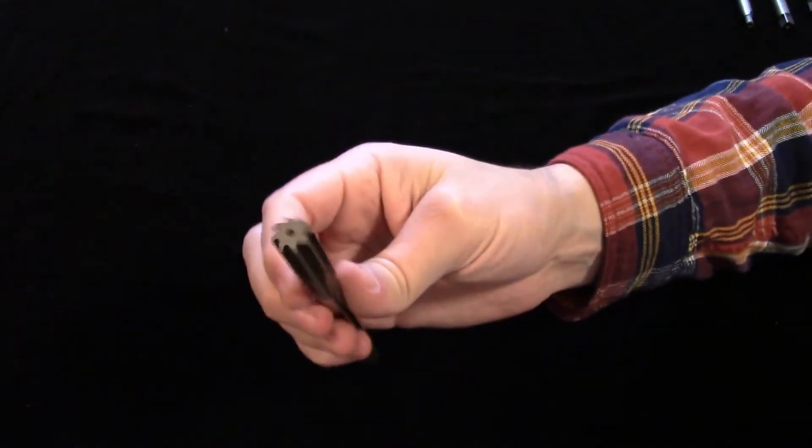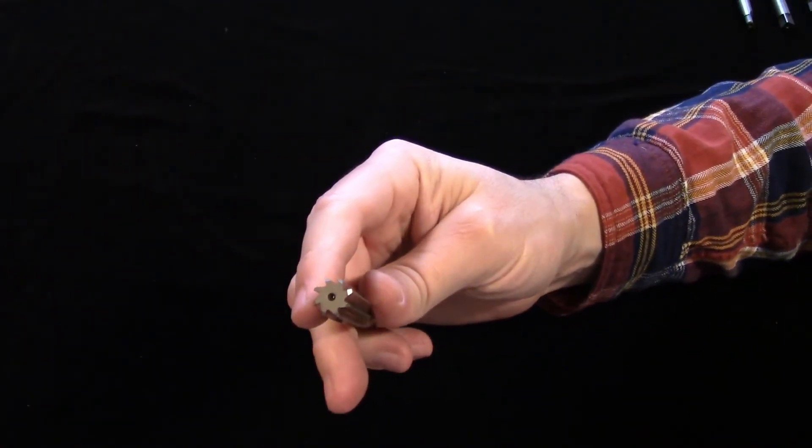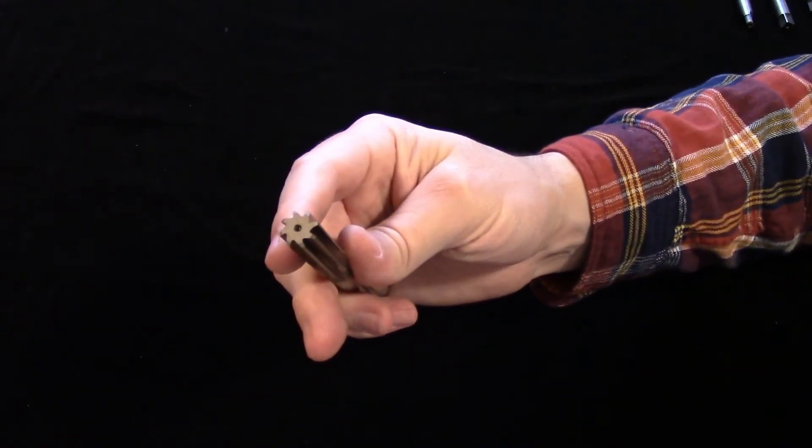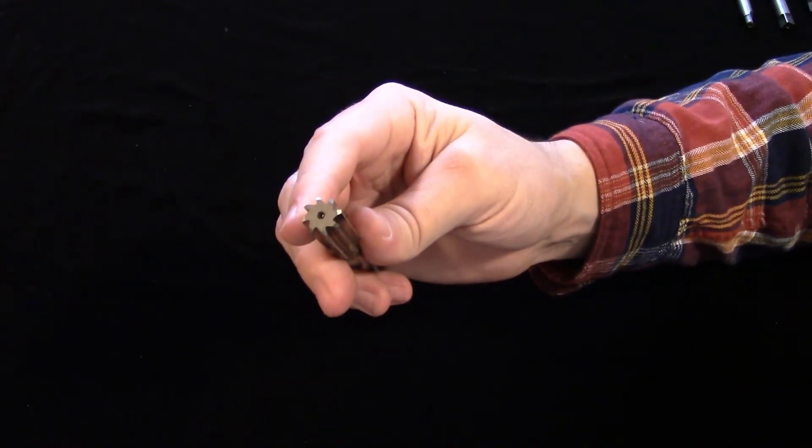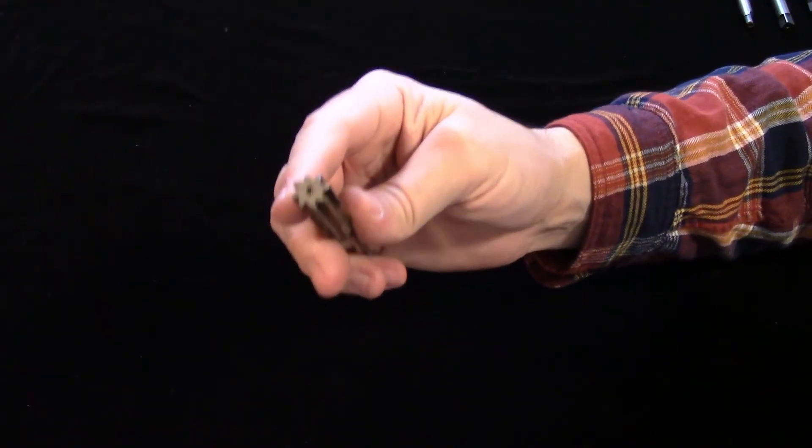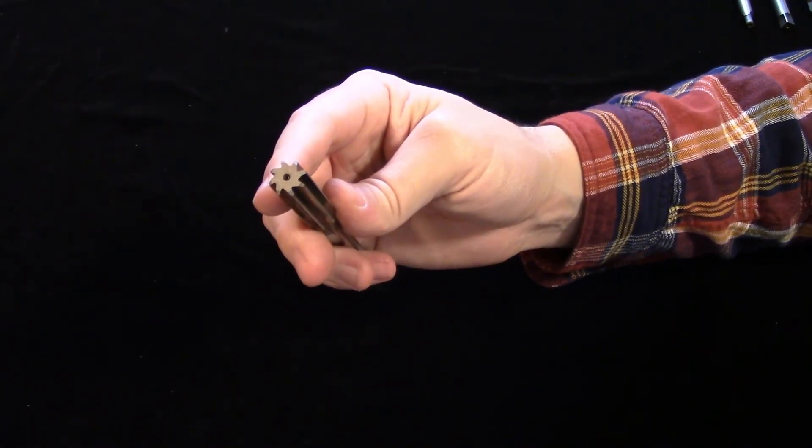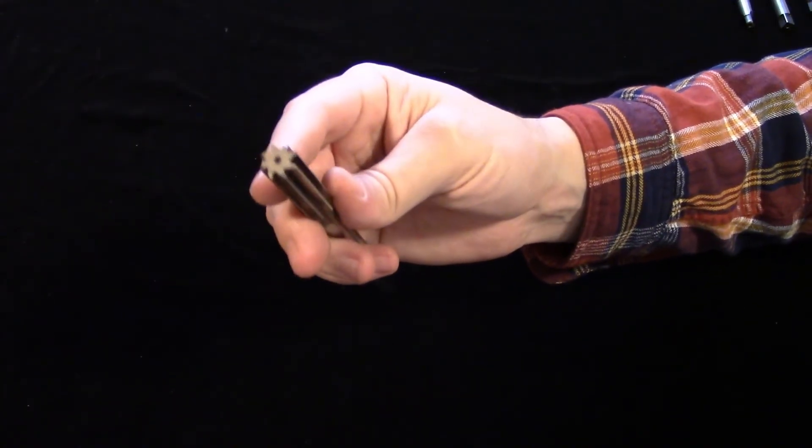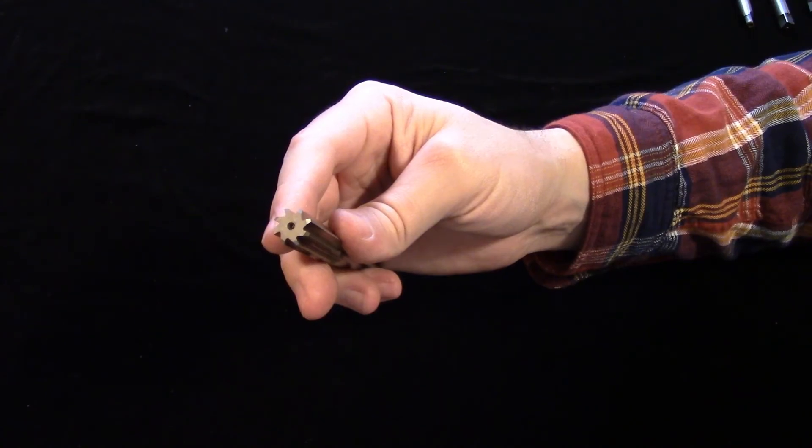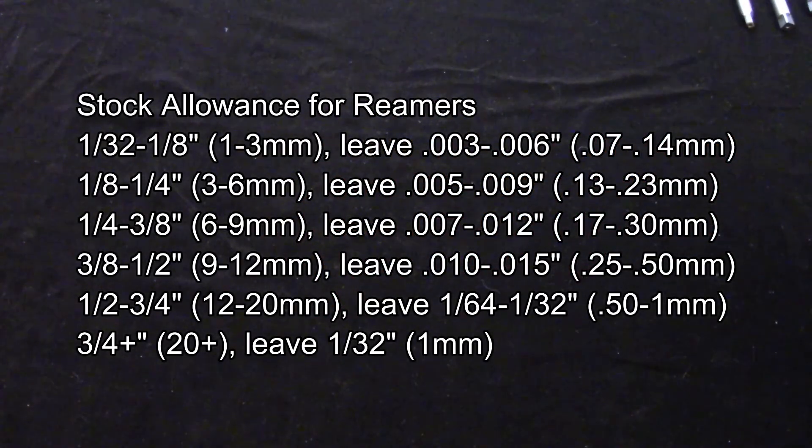The flutes of a reamer do not have much space in them, so the pilot hole needs to be close to size but still leave enough material for the reamer to remove, otherwise it will just rub and dull the reamer. How much stock to leave depends on the size of the reamer, so please refer to this stock allowance chart. I've also put this down in the description, and it's part of my class handout that's linked down there as well. So, thanks for watching, and I'll see you next time.